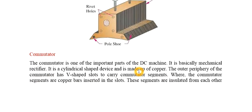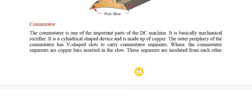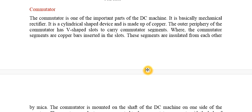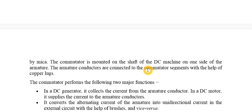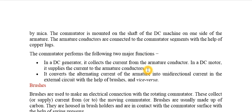The commutator is a very important part of the DC machine. It works with brushes to convert bipolar AC current to DC current, so it is called a mechanical rectifier. It is a cylindrical-shaped device made of copper, with several slots carrying commutator segments. These copper bar segments are inserted in the slots and insulated from each other through mica. The commutator is mounted on the shaft on one side of the armature.